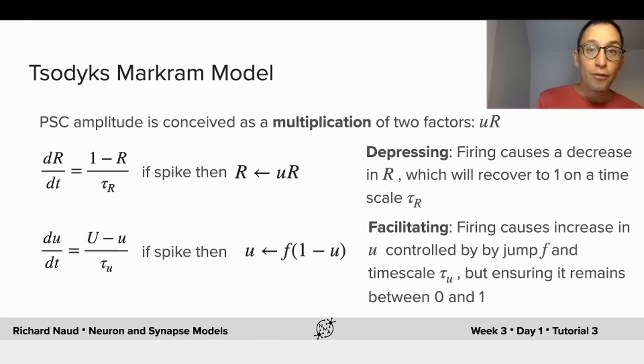The combination of this increase in release probability and this decrease in the size of the readily releasable pool of vesicles has been put into a mathematical model by Tsodyks and Markram. It's called the Tsodyks-Markram model. Now, this model uses two state variables to describe the amplitude of the postsynaptic currents, U and R. The multiplication of the two gives the amplitude. R is thought to be the size of the readily releasable pool. It follows linear dynamics on a timescale tau_r, and whenever a presynaptic spike comes, it is reduced by U, which is the release probability at that time.